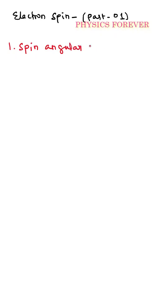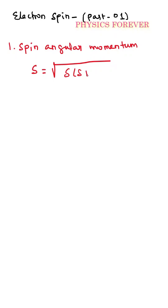Spin angular momentum — how to write spin angular momentum? S equals root of s into s plus 1, multiplied by h-bar. That is the total spin magnitude.